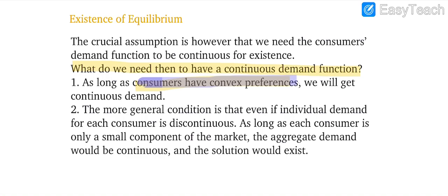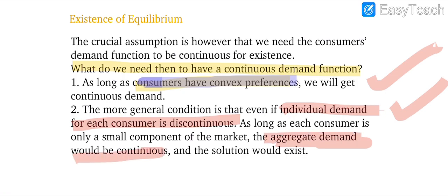A more general question is: what if individual demand for each consumer is discontinuous? First, if consumers have convex preferences, the usual demand is discontinuous. But if consumers are only a small component of the market, aggregate demand would be continuous and the solution would exist. We require aggregate demand to be continuous. More detail on general equilibrium in the market will be discussed in the next lecture.